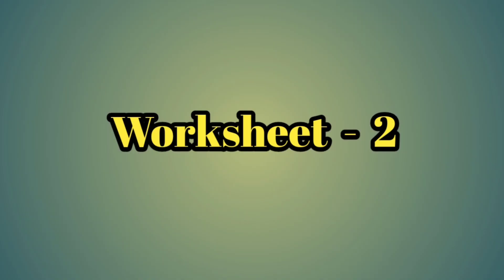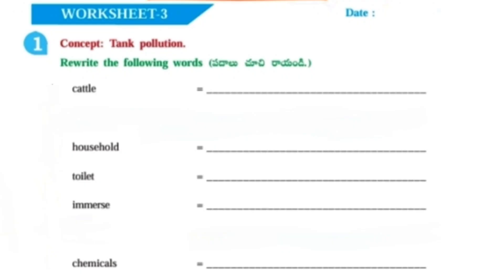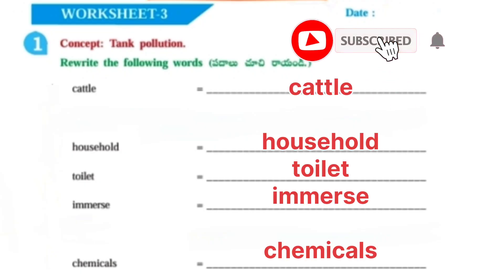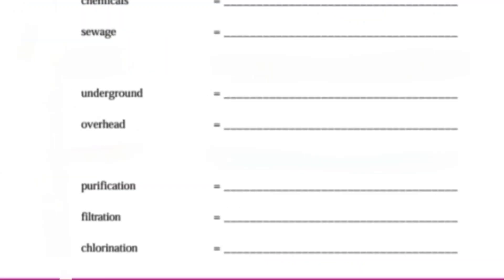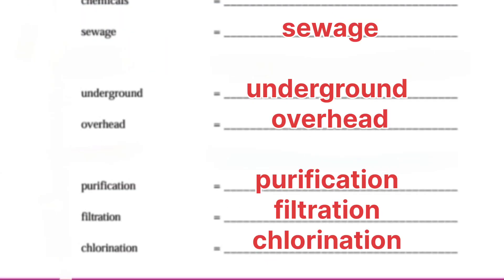Next Worksheet No. 2, Concept: Tank Pollution. Glossary words: Cattle, Household, Toilet, Immerse, Chemicals, Seaways, Underground, Overhead, Purification, Filtration, and Chlorination.